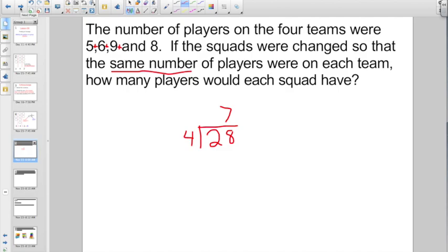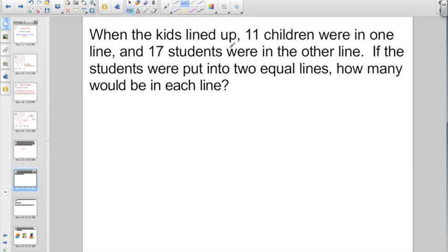Two steps to this algorithm. When the kids lined up, 11 children were in one line and 17 students were in the other line. If the students were put into two equal lines, your clue that you're doing an average, how many would be in each line?